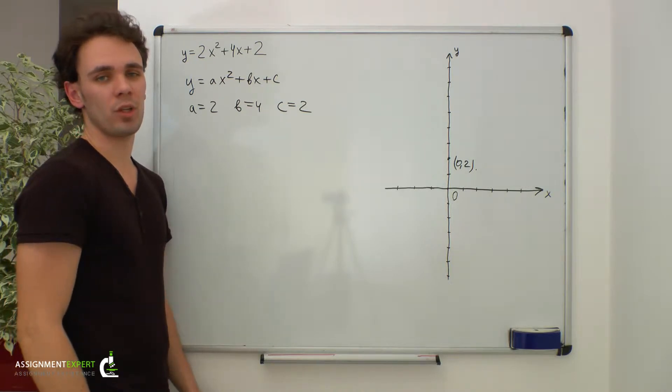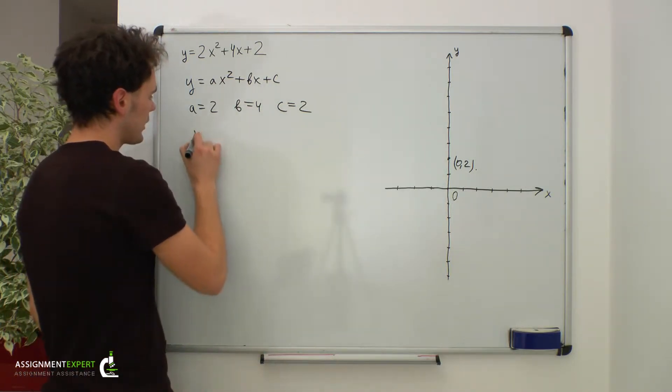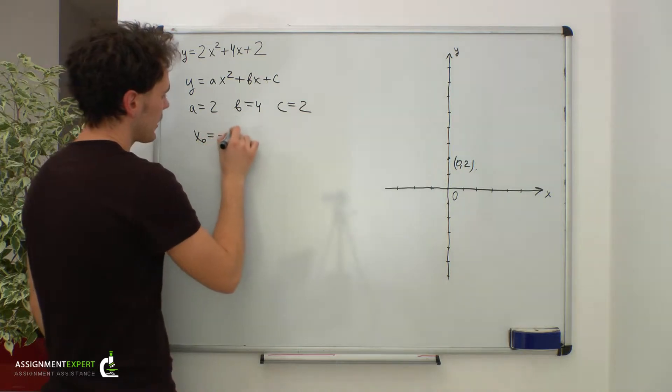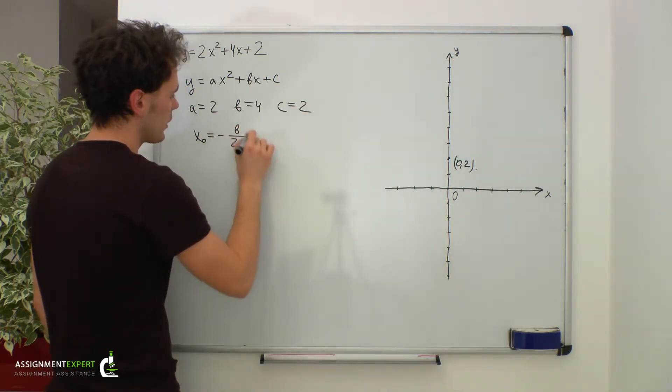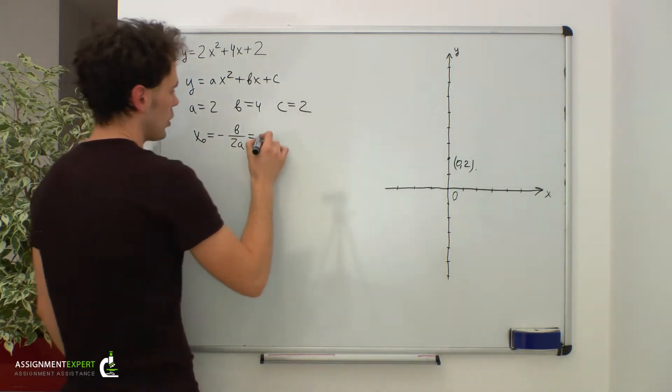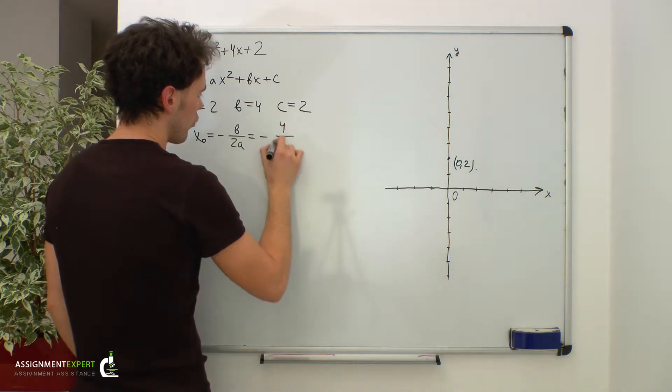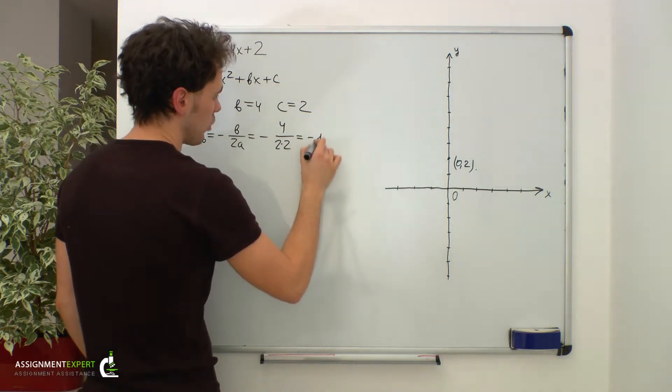We have the special formula for the x-coordinate of the vertex. It looks like this: x0 equals negative b over 2a. In our case this is equal to negative 4 over 2 times 2, which gives us negative 1.